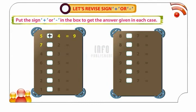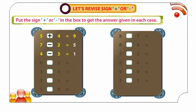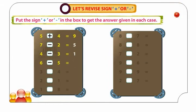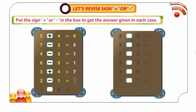7 minus 2 is equal to 5. 4 minus 3 is equal to 1. 6 minus 5 is equal to 1. 3 plus 4 is equal to 7. 2 minus 1 is equal to 1.